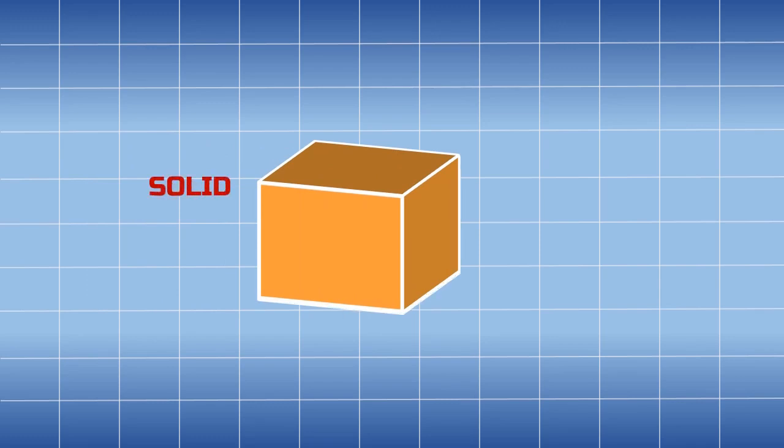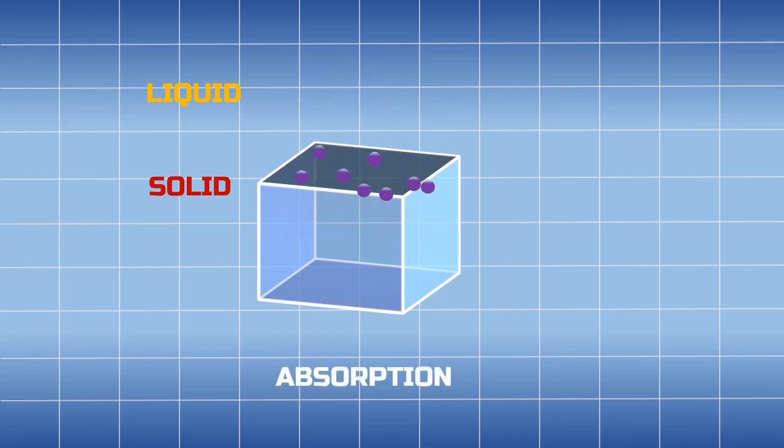Absorption is a process of incorporation of atoms or molecules of a substance in one state into another substance of a different state. As you can see here, liquid is falling on the solid and entering the solid through small pores on the surface. This is a process of absorption.